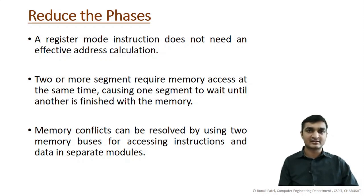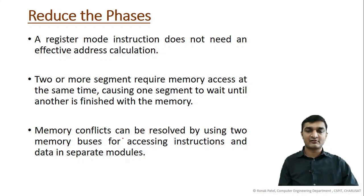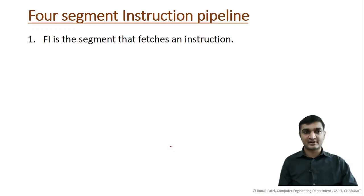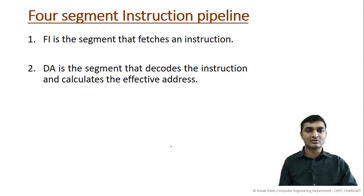For example, while fetching an instruction you access memory, and while fetching the operand you also access memory. So when an instruction is in the fetch-operand stage, it cannot fetch the next instruction. As a solution, you can resolve this conflict by using two buses — one for the data memory bus and another for accessing instructions. This leads to the proposed four-segment instruction pipeline.